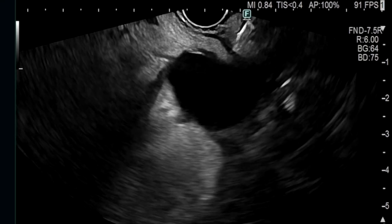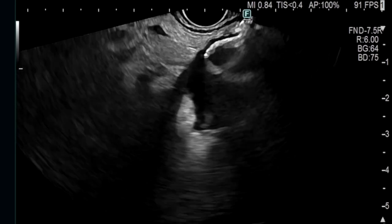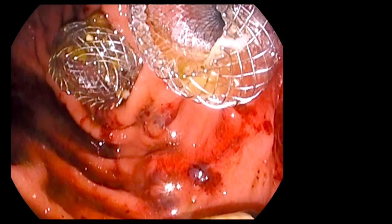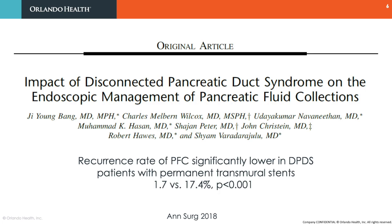Both fluid collections were drained using lumen-apposing metal stents, and at three-week outpatient follow-up, the lumen-apposing metal stent in the most proximal collection was replaced with double pigtail plastic stents. The objective here is to keep the transmural tract patent so that the disconnected gland can drain via the fistula into the stomach, thereby minimizing the possibility of fluid collection recurrence. In a prior study, we have shown that patients with indwelling transmural stents have significantly lower rates of PFC recurrence than patients in whom the stents are removed.